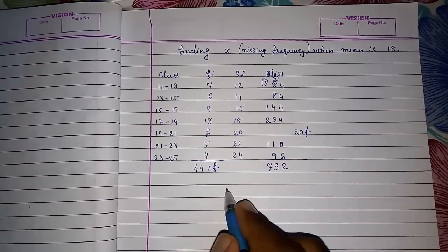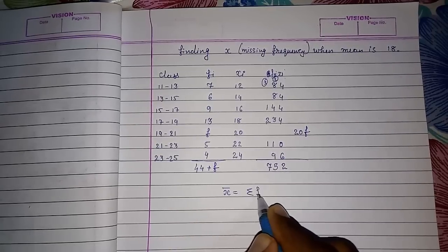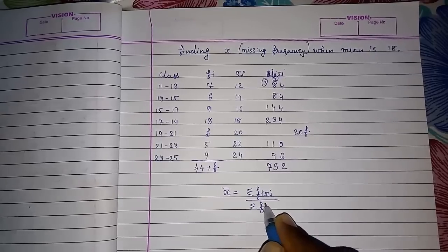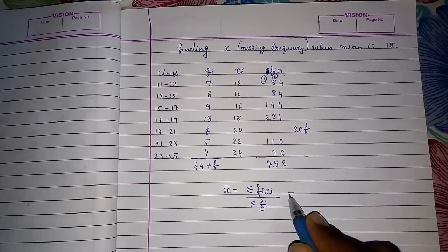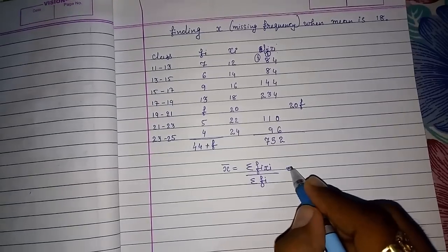Now we got sum of FI XI and we also got sum of FI. Now the simple formula for finding the mean is X bar is equal to sigma FI XI by sigma FI. Means it's FI XI upon FI. So we know what is sum here, it's 752, but I have to write down here 752 by 44 plus F.